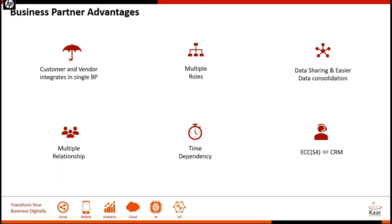The next advantage is time dependency — maintenance of time-dependent data at different sub-entries for roles, addresses, and relationships. For example, if you want to pay a vendor, you maintain bank information based on time dependency. You can keep existing bank details valid until a certain date, and then schedule a new set of bank data from a future date onwards. This time-dependent data can be stored for each role and also for bank information and payment transactions.